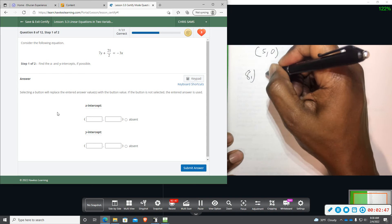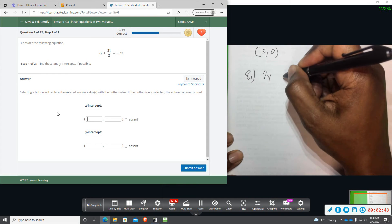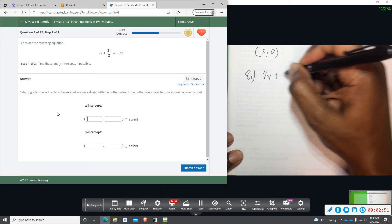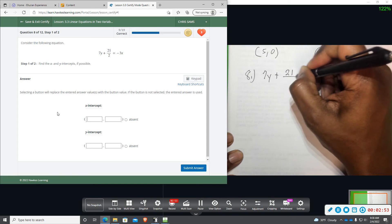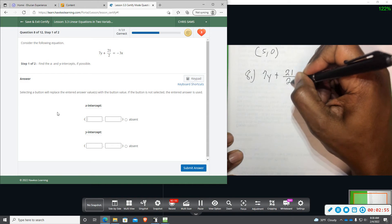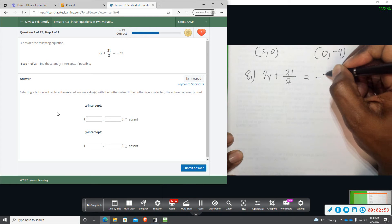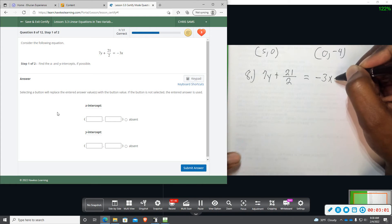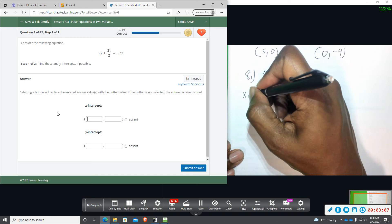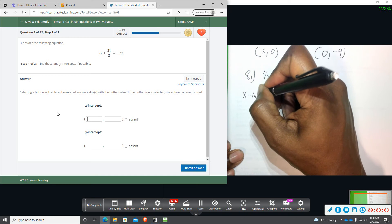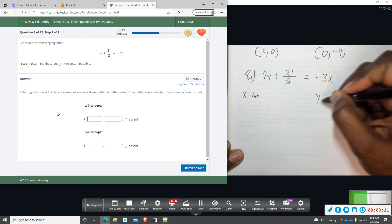This time, we have 7y plus 21 over 2 equals negative 3x. And so we're going to find the x-intercept, and then we're going to find the y-intercept.